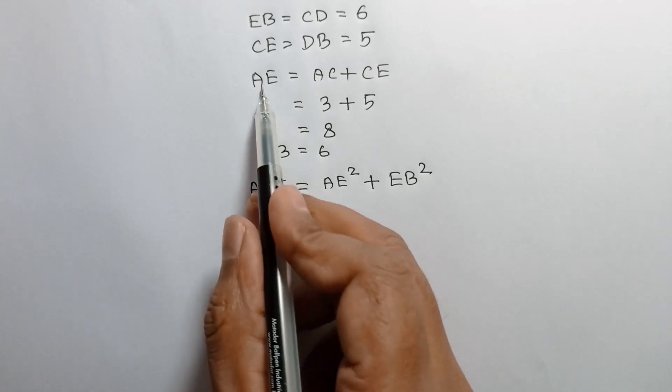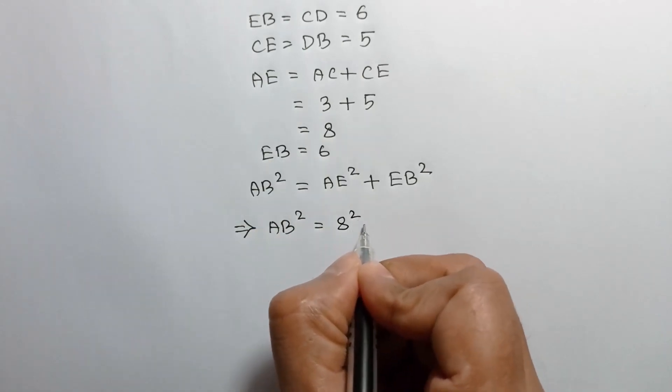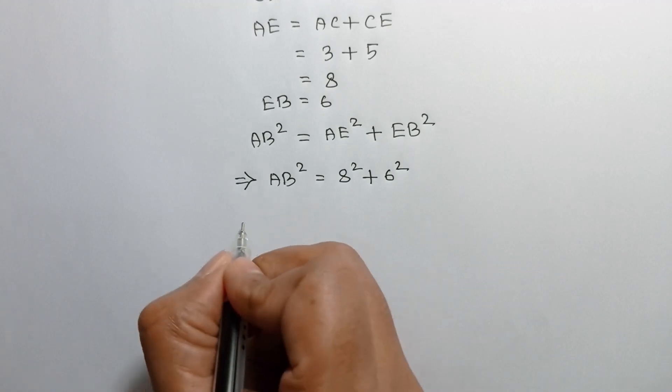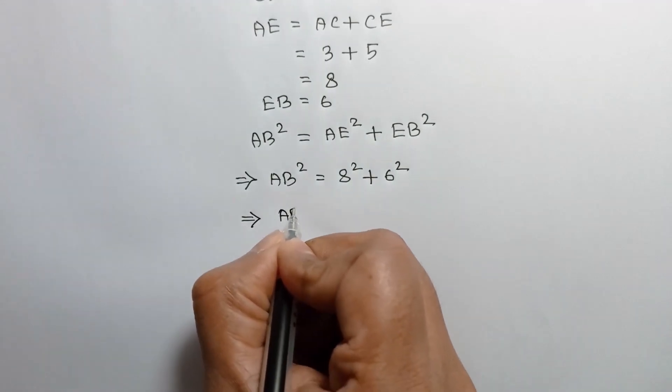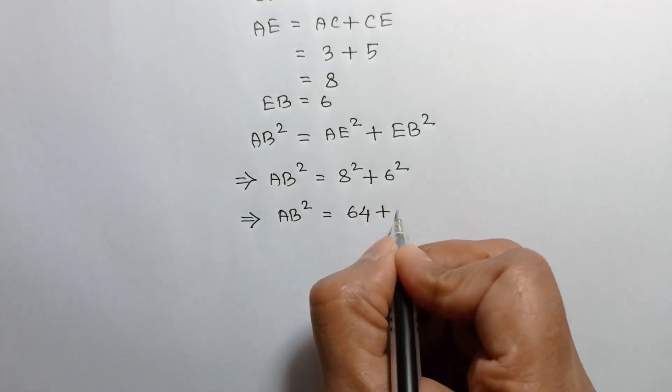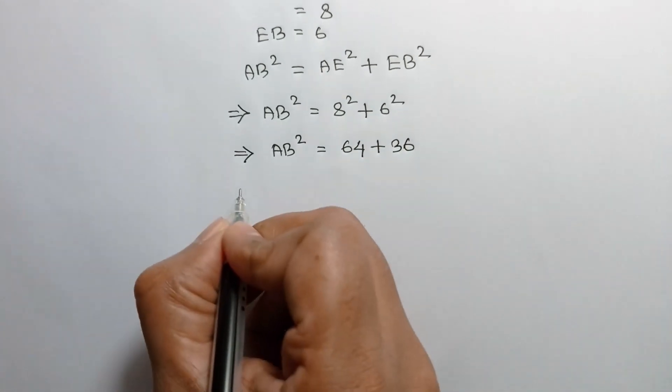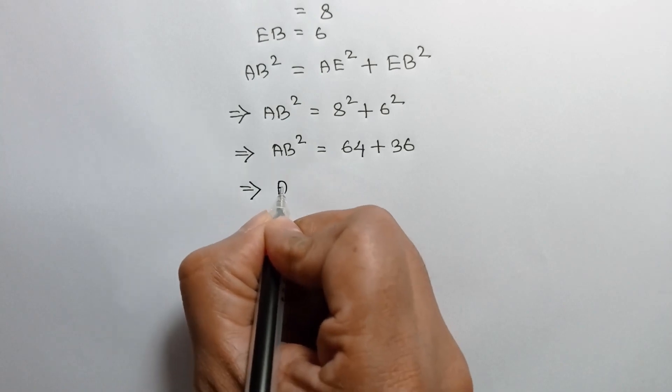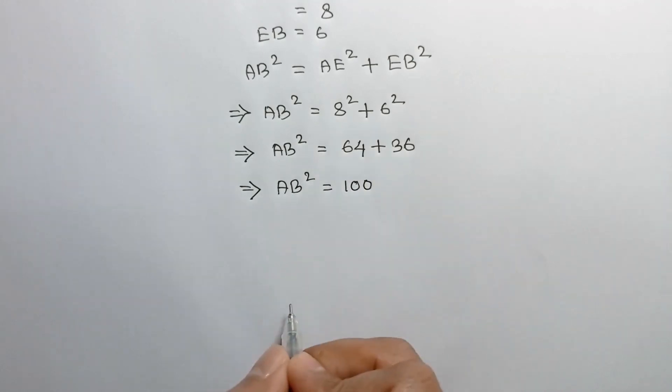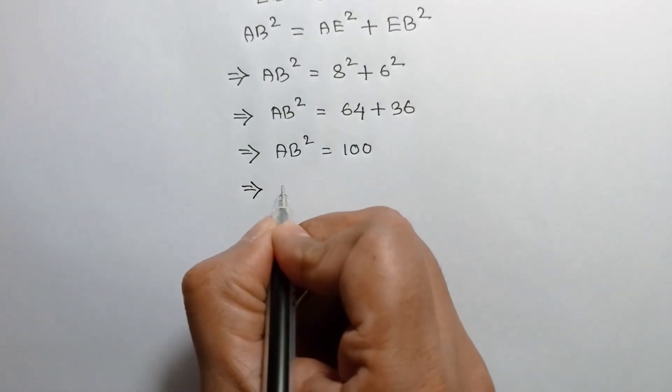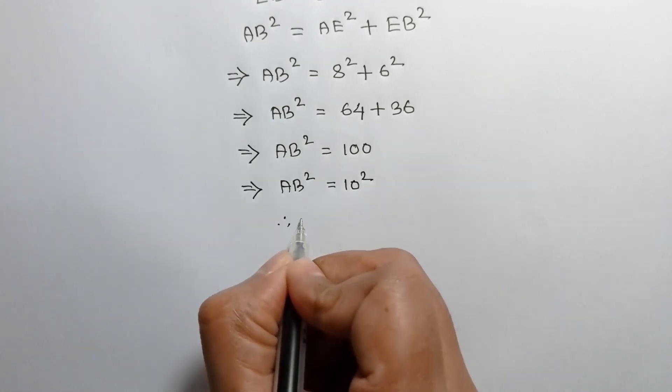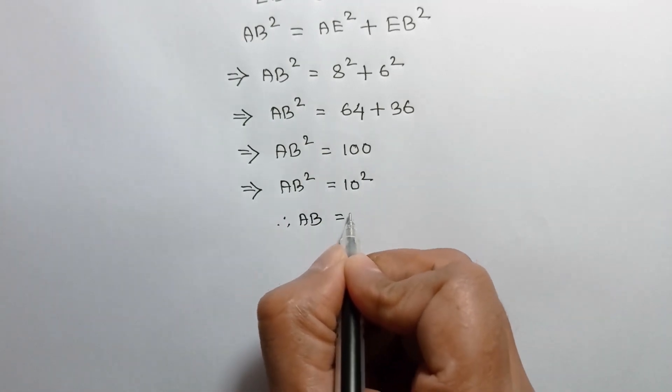AB square is equal to 8 square plus 6 square. So AB square is equal to 64 plus 36, or AB square is equal to 100. So AB is equal to 10.